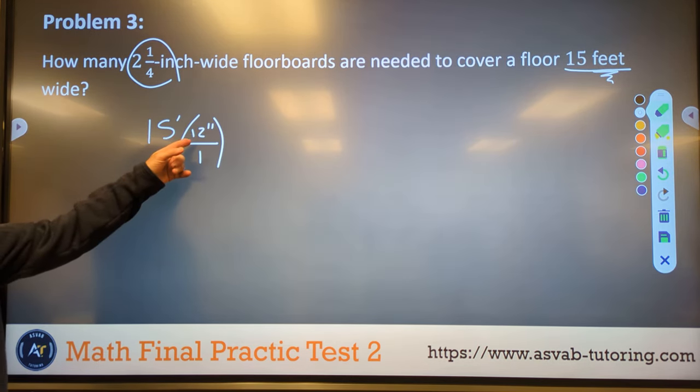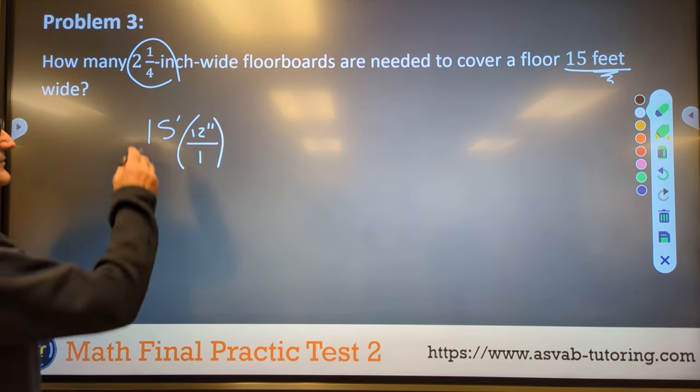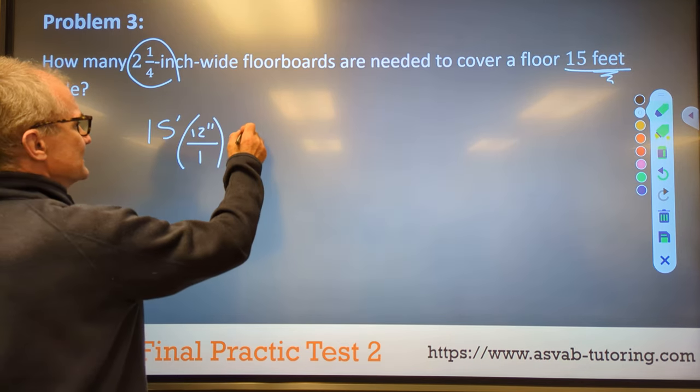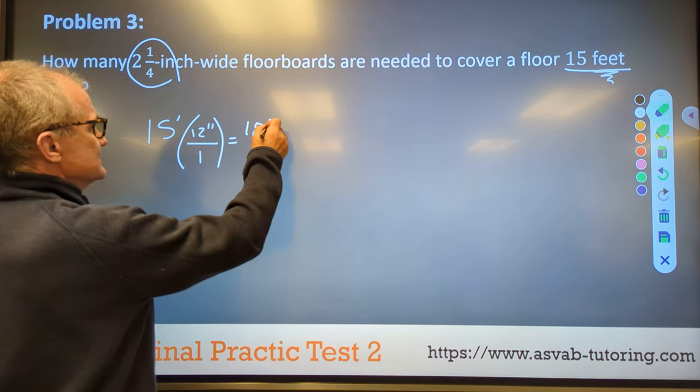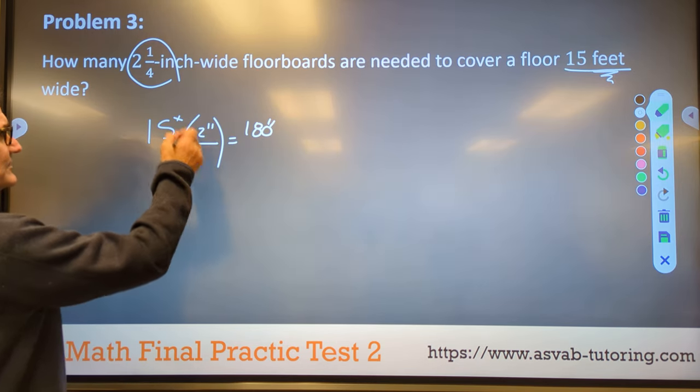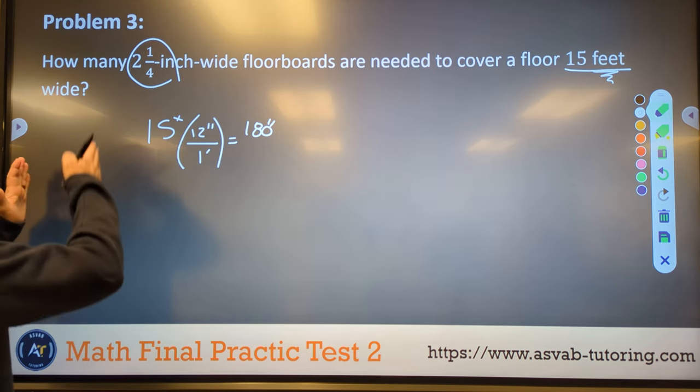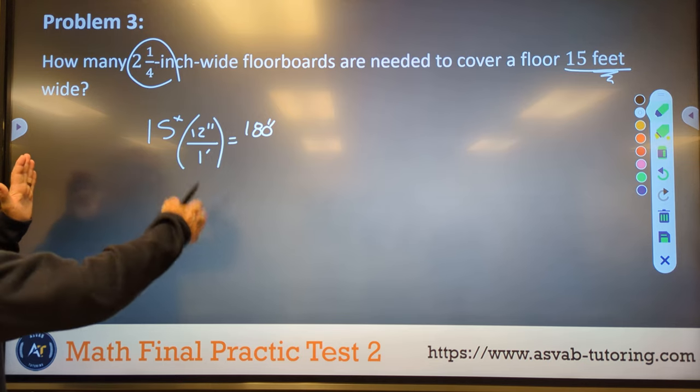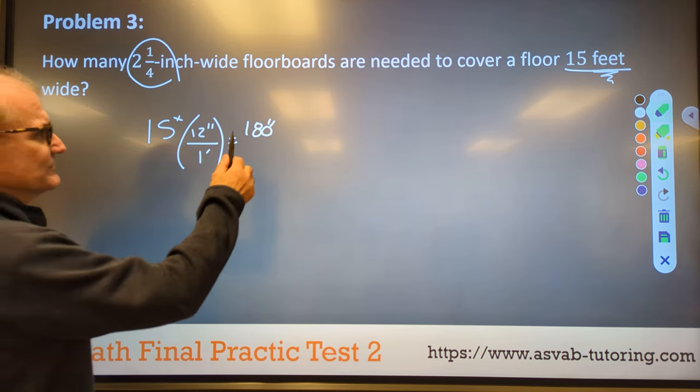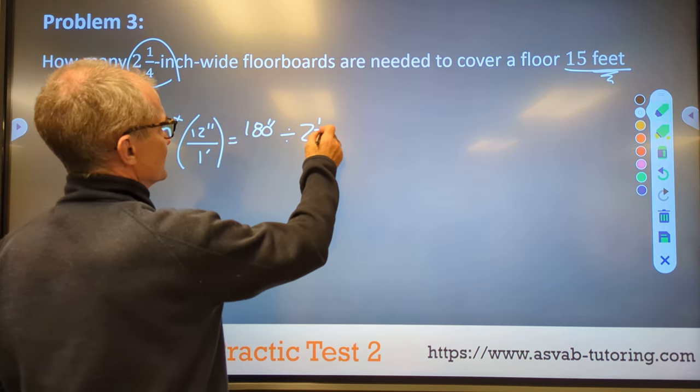15 times 10 is 150. 15 times 2 is 30. So if I multiply 15 by 12, it's going to give me 180 inches. My feet will cancel and that will give me inches. So I have 180 inches. And then I know that in that 180 inches, each board is two and a quarter inches. So I have to do 180 divided by two and a quarter inches.